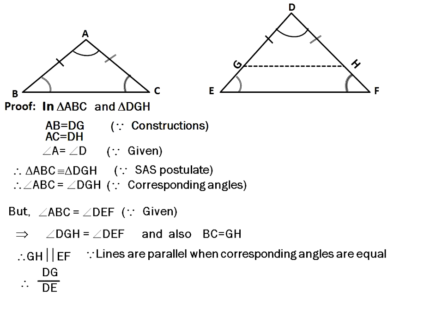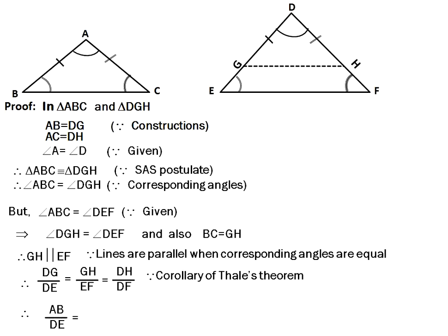Now we apply the Thales theorem. Therefore, DG divided by DE equals GH divided by EF equals DH divided by DF, by the corollary of Thales theorem. This implies triangle ABC is similar to triangle DEF. Therefore, AB divided by DE equals BC divided by EF equals AC divided by FD, which proves that triangle ABC is similar to triangle DEF.